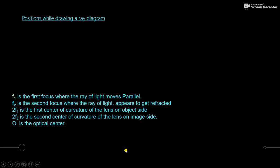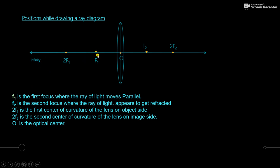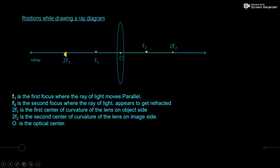Now, positions while drawing a ray diagram. f1 is the first focus where rays of light move parallel. f2 on the other side is the second focus where the rays get refracted. 2f1 is the first center of curvature of the lens on the object side, and 2f2 is the second center of curvature on the image side. O is the optical center. The object is placed on the left-hand side and the image is formed on the right side.